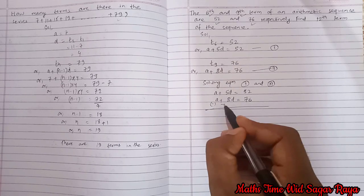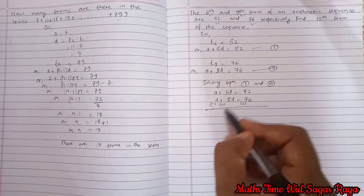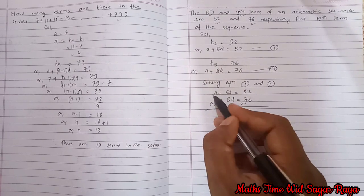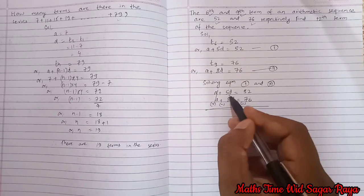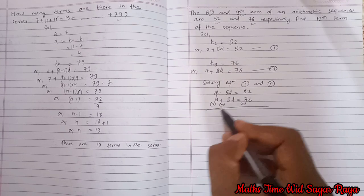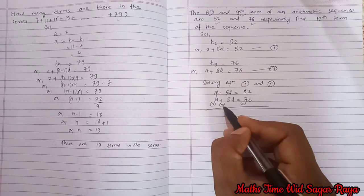If you subtract both sides then the signs will change. This plus will also change, and right hand side also sign will change. Now this a, positive a and negative a, it will be cancelled. A minus a cancel. Now 5d minus 8d.